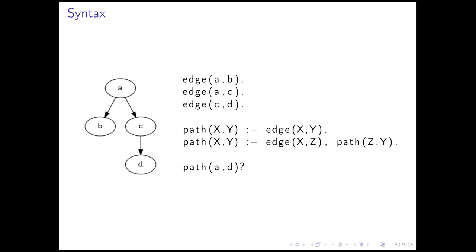Back to our example, we see that the first three statements for the edges are facts. The following two statements are rules — how we define the predicate path. And finally, we have a goal: path AD. We now want to understand how a goal can be resolved, or how we can find a solution to a goal. This happens by a process called resolution.